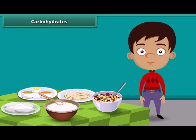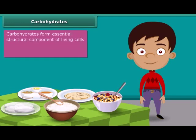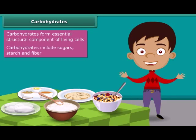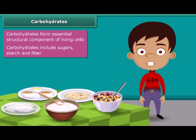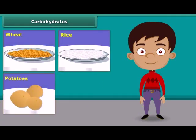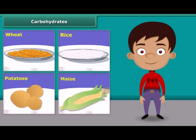First, carbohydrates. Carbohydrates form an essential structural component of living cells. They are the main source of energy for animals. Carbohydrates include sugars, starch, fiber, etc. They are mainly found in wheat, rice, potatoes, corn, and maize.